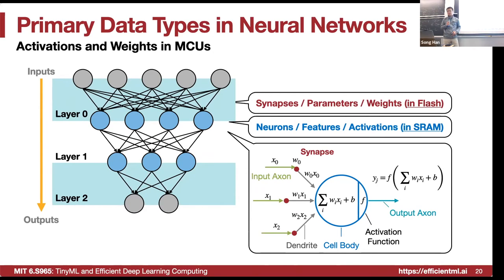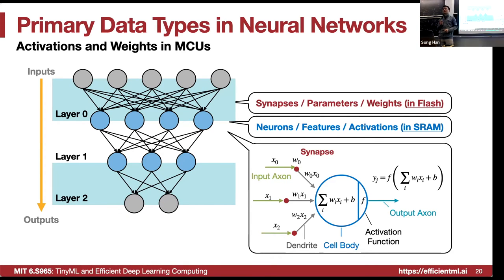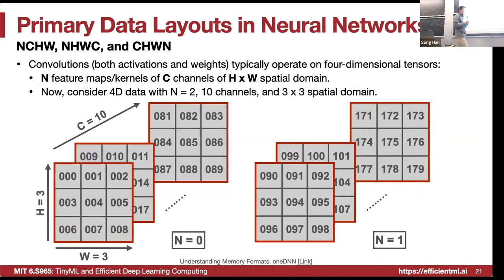Given a neural network, we have weights and activations. We store the weights in flash. When calculating a certain layer, we bring the weights of that layer into SRAM during processing. Activations need to be both readable and writable, so they can only reside in SRAM — about 256 to 320 kilobytes depending on the microcontroller. Since memory is the key bottleneck, we need to discuss several data layouts: how to store weight and activation tensors in the microcontroller.